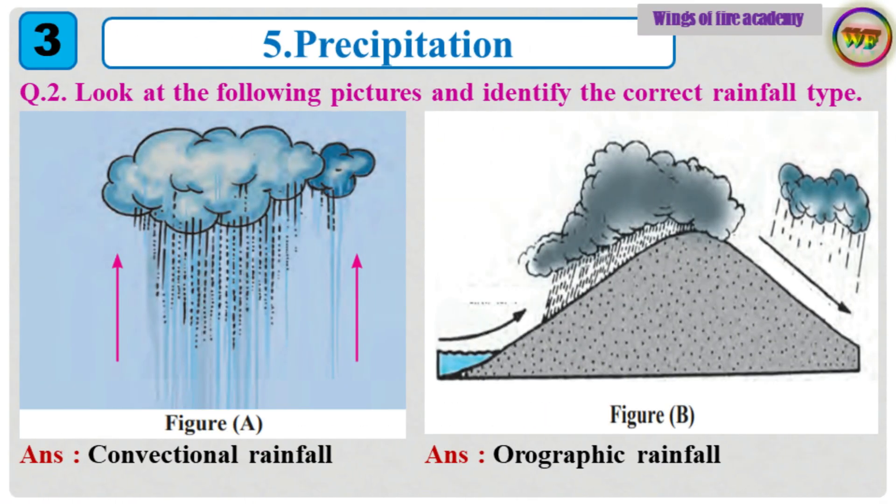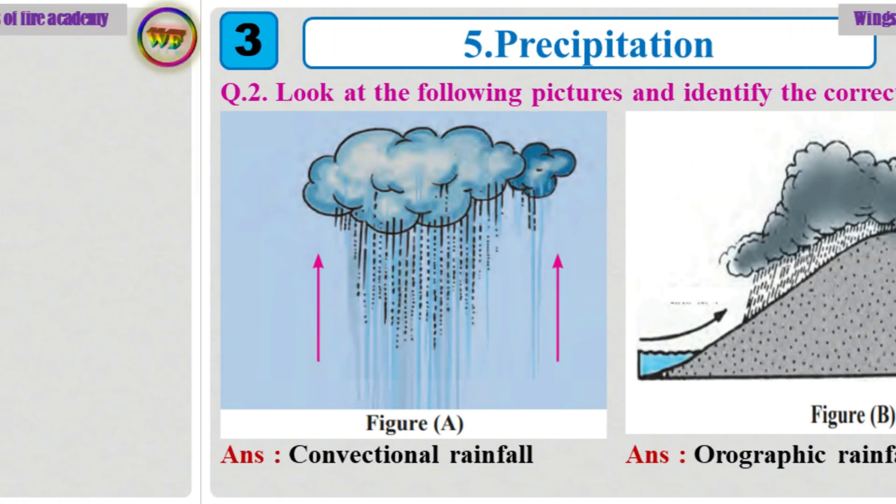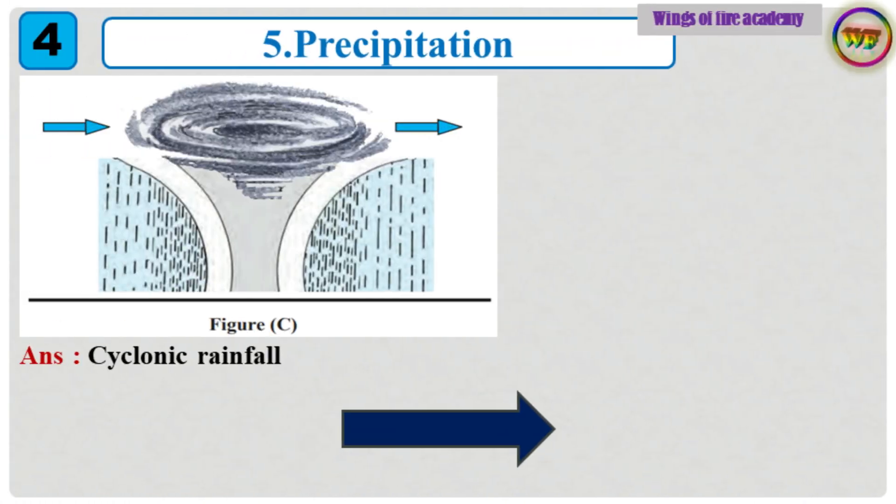Question 2: Look at the following pictures and identify the correct rainfall type. Answer: Convectional rainfall. Answer: Orographic rainfall. Answer: Cyclonic rainfall.